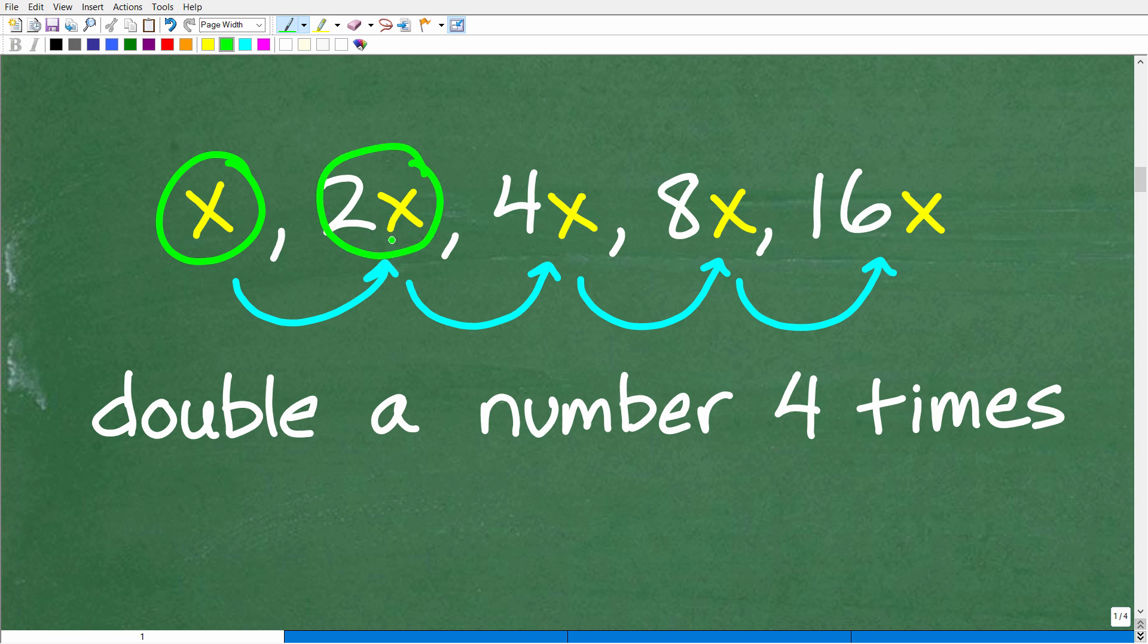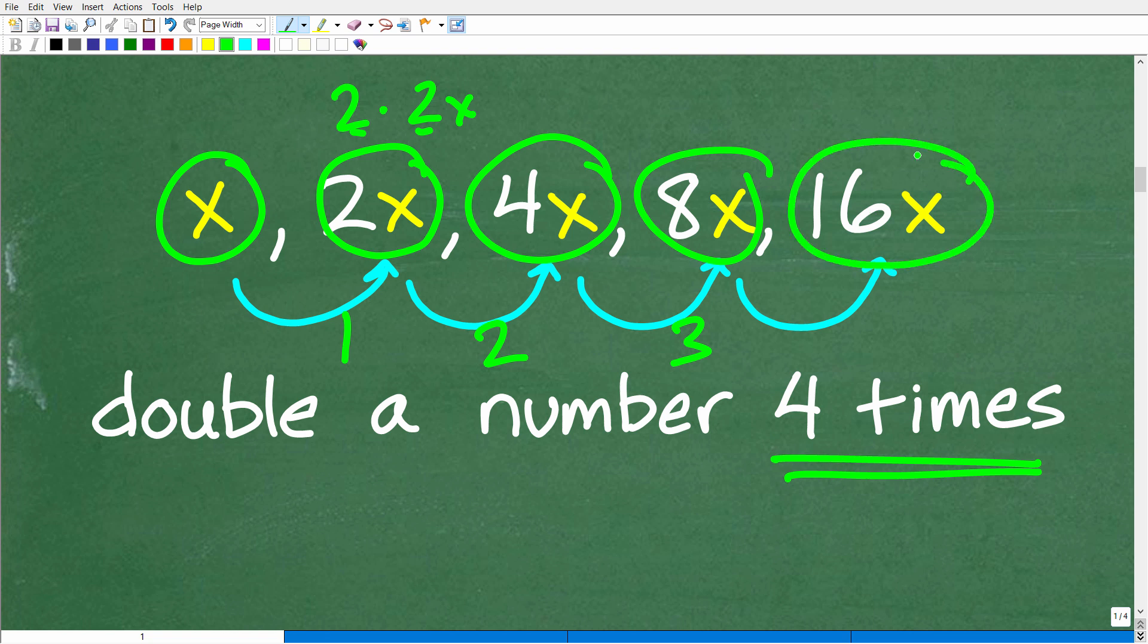Our second double is going to be two X times two, right? We're going to double this thing right here. So two X times two is going to be four X, right? Cause two times two X. Remember you multiply the coefficient. So two times two is four X. So this is our second double. So we're going to continue to double here, right? So we're going to double this thing four times. This was our first time. This was our second time. So let's double again. So four X times two is eight X. That's our third double. And then we are going to double one more time to get our doubling four times, right? So eight X times two gets us to 16 X. All right. So this was our fourth time that we doubled this number X. So one more time. So X, this is our first double two X, four X, eight X, 16 X. Okay. So the result of doubling this number four times is this variable expression 16 X.